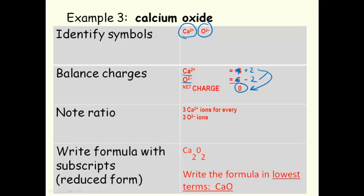Note the ratio. We have 1 calcium for every 1 oxygen. We actually end up with the formula CaO, calcium oxide.